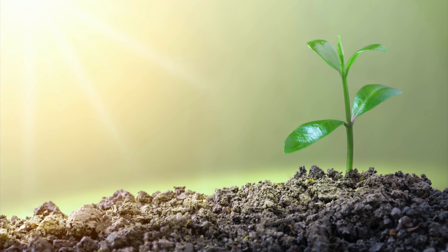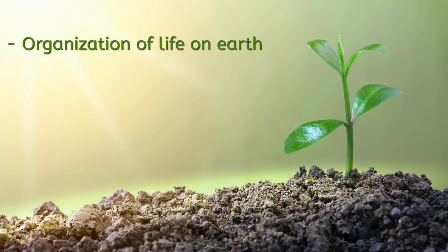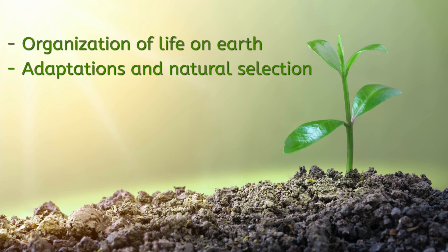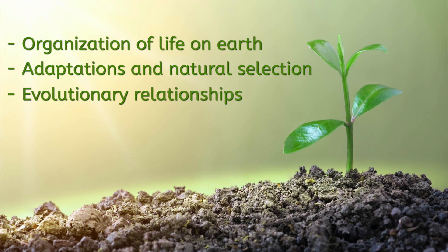Let's recap what we've discovered today. We looked at the organization of life on Earth, divided into three domains: eukarya, archaea, and bacteria. We discussed how adaptations and natural selection lead a population to become better suited to its environment. And we compared the evolutionary relationships of organisms based on a common ancestor. So you've had just a taste of the vast amount of biodiversity that exists on Earth, and we've delved just a little into the processes that cause it.